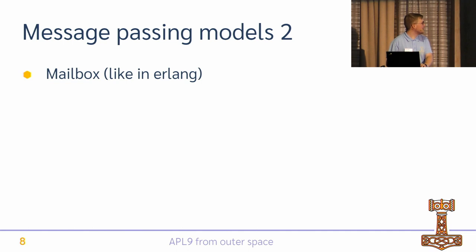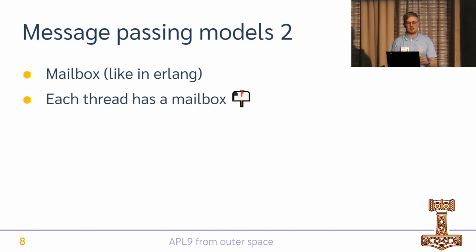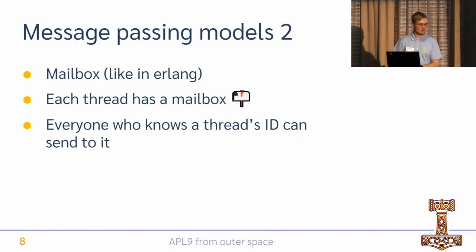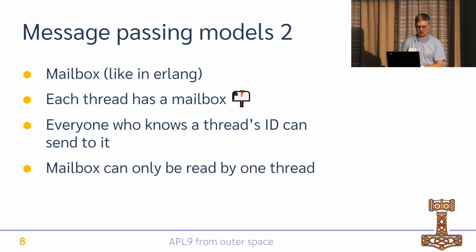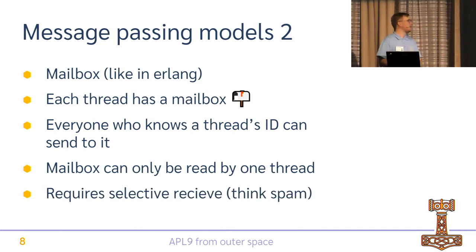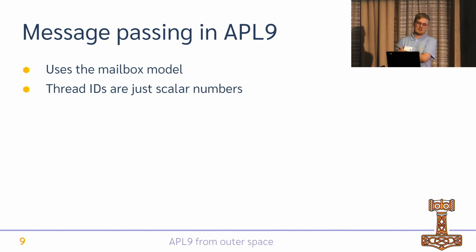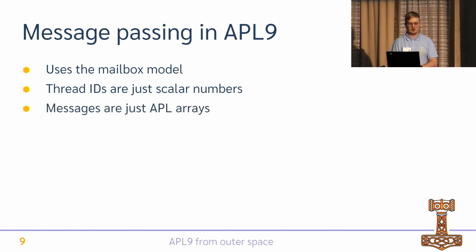There's another model — I don't know the real name, but I call it the mailbox model, similar to Erlang. Each thread has a mailbox, a location for messages to go in. Anyone who knows a thread ID can send stuff, but only the thread itself can pick stuff out — just like real mailboxes: if someone knows your address they can send you things, but only you should take them out. It requires a way to select what to pick out of the mailbox, since we have only one location for input, whereas with channels we have different locations. In APL9 I used the mailbox model, and thread IDs are just scalar numbers. Messages can be any APL array.